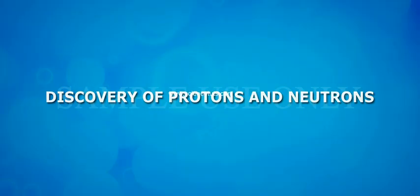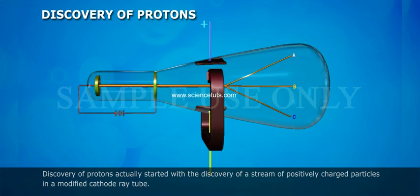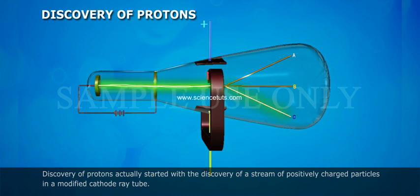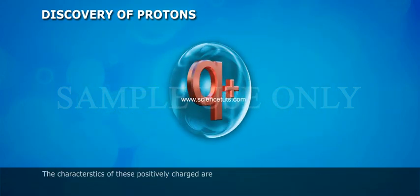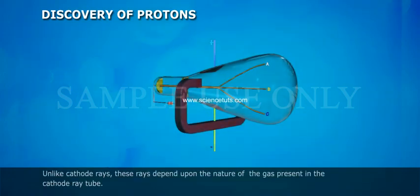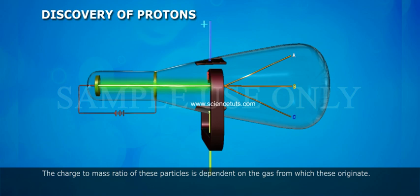Discovery of protons actually started with the discovery of a stream of positively charged particles in a modified cathode ray tube. The characteristics of these positively charged particles are: unlike cathode rays, these rays depend upon the nature of the gas present in the cathode ray tube. The charge to mass ratio of these particles is dependent on the gas from which they originate.